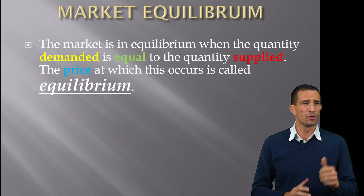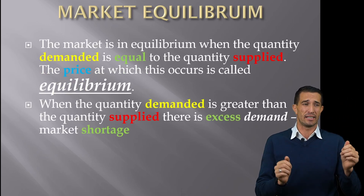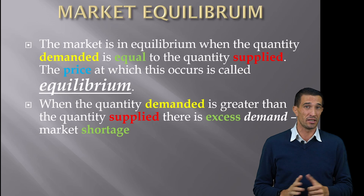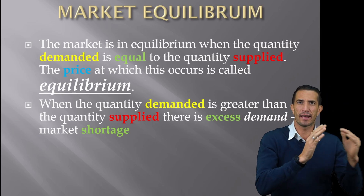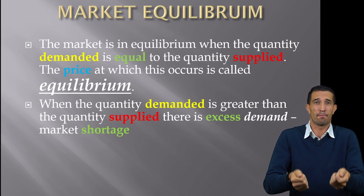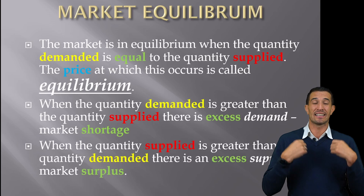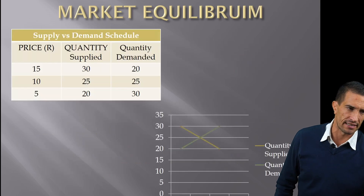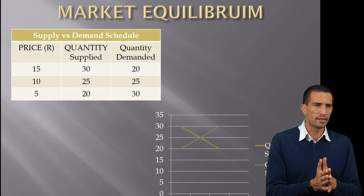Market equilibrium is when quantity demanded equals quantity supplied — we call that the equilibrium price. If demand is greater than supply, there's excess demand and a shortage in the market — for example, if consumers want more butter than producers are supplying. The opposite is also true: if quantity supplied is greater than demand, there's excess supply and a surplus in the market. We need to be mindful of both situations.